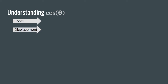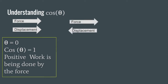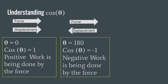Here we have two vectors — a force vector and a displacement vector — both pointed in the same direction. The angle between them is zero, meaning cosine theta equals one, because cosine of 0° equals 1. This tells us positive work is being done. If force points one way and displacement points the other way, the angle between them is 180°, and cosine of 180° equals negative one, which tells us negative work is being done.